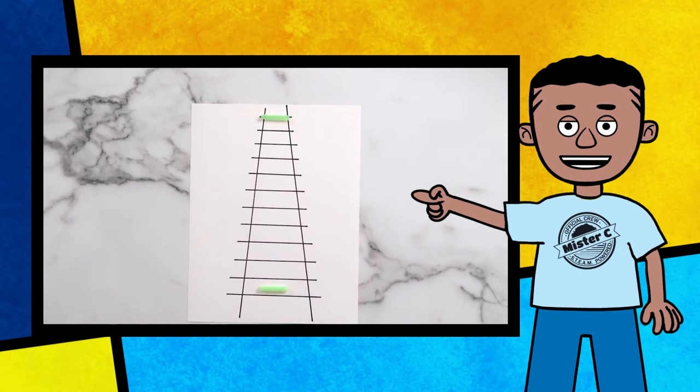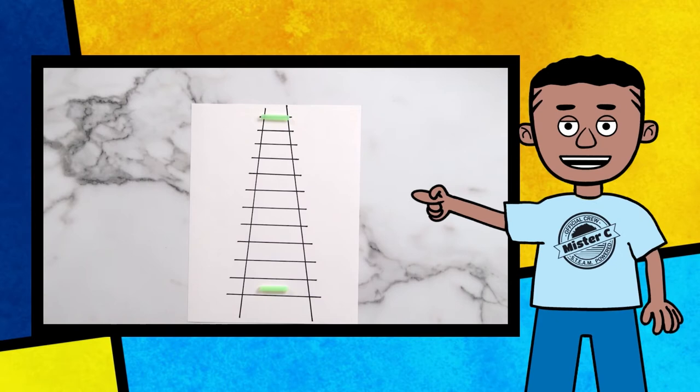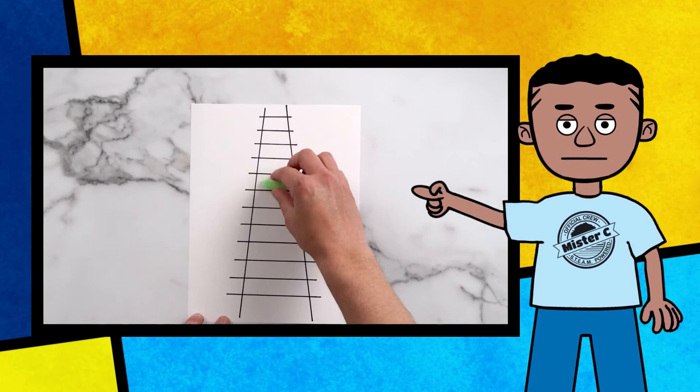The straw actually is the same size, but our brain uses previous experiences and the things we can see near the straws to try to figure out their size.